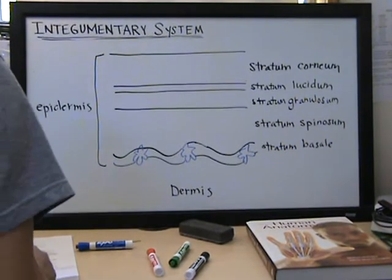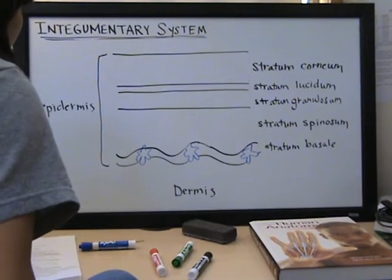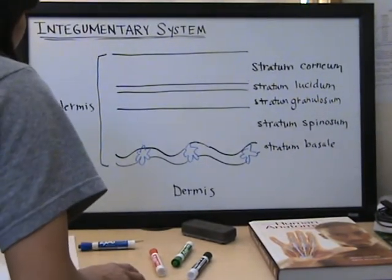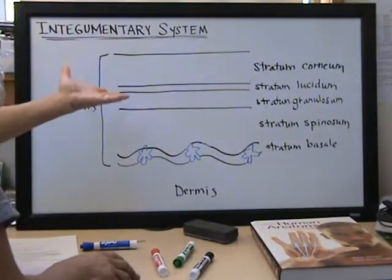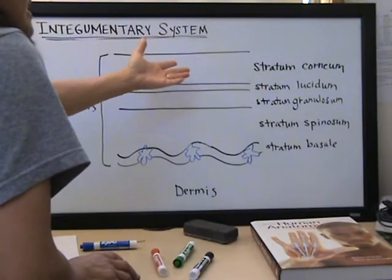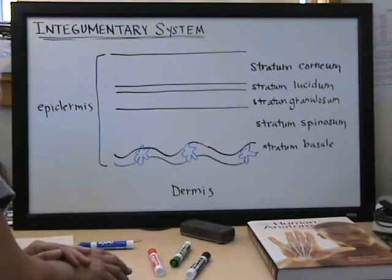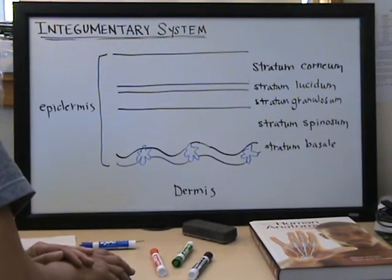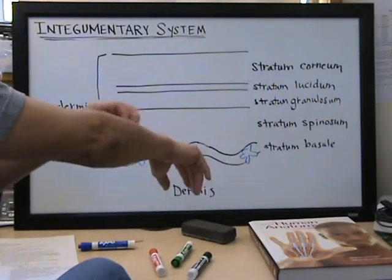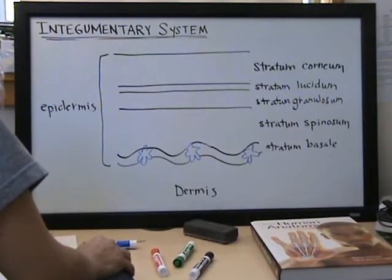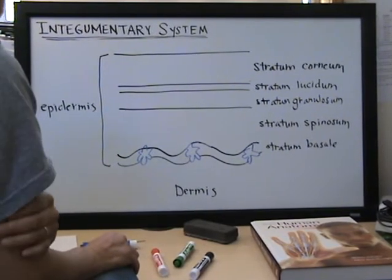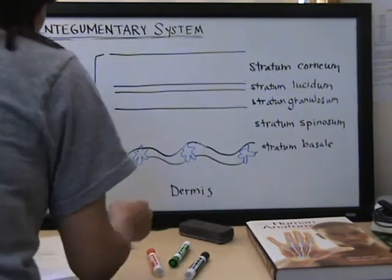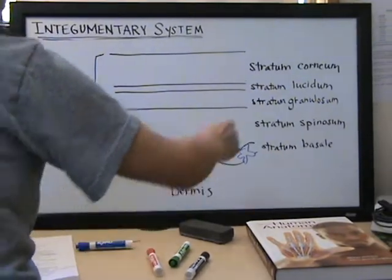The stratum corneum is made up of stratified squamous epithelia. And these cells don't have nuclei, they're essentially dead skin or dead cells that are mainly for protection. And you know that's this outer layer here. The stratum lucidum is a clear layer. Lucidum means clear.